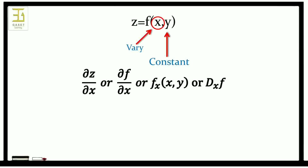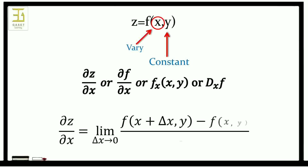The partial derivative of z with respect to x is denoted by dou z by dou x, or dou f by dou x, or f_x of x comma y, or d_x f. This partial derivative can be defined using limits: dou z by dou x is equal to limit as delta x tends to 0 of f(x plus delta x, y) minus f(x, y), divided by delta x.